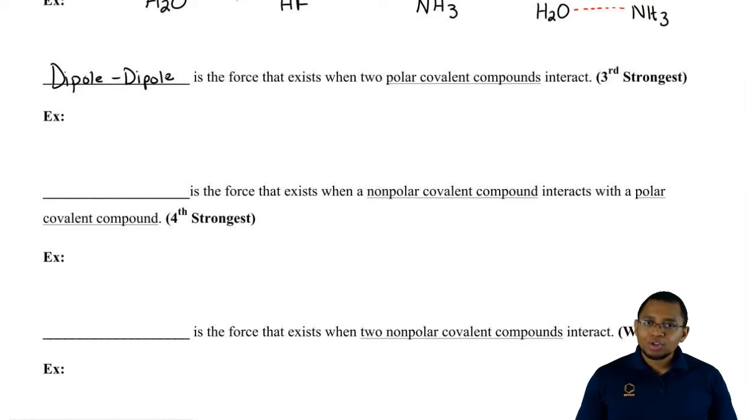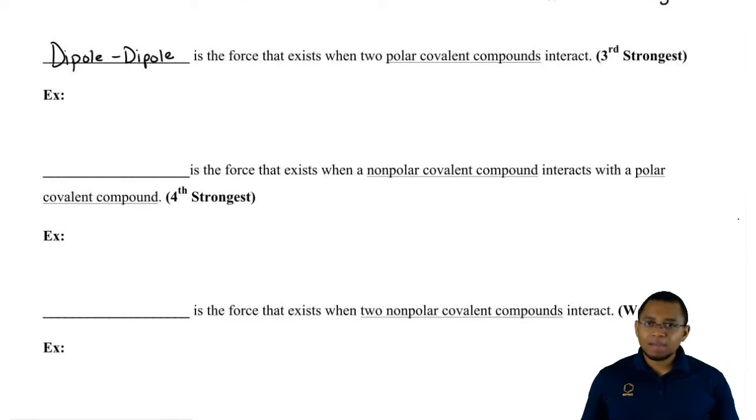Dipole means polar, so dipole-dipole again means polar-polar. If we think about it, we can just think of a polar compound, maybe one that we drew earlier. One that we drew earlier would be SiBr4 2-.